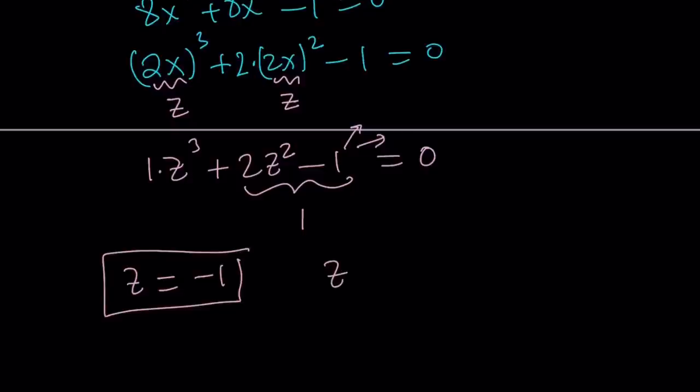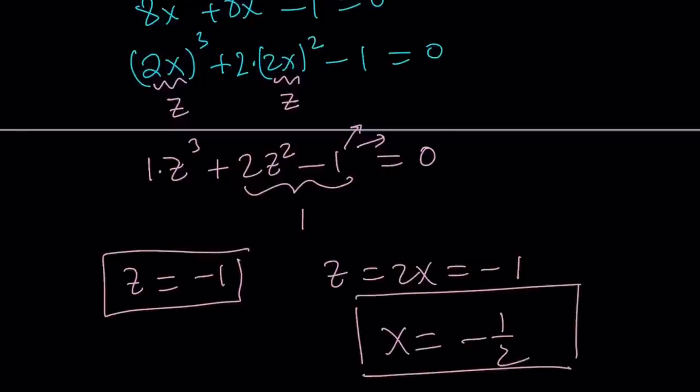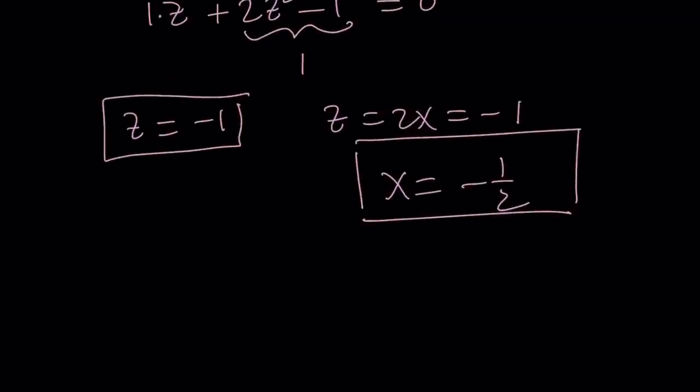But remember, z is 2x. So, 2x is equal to negative 1, that means x equals negative 1 half is a real solution. And guess what? That is the only real solution. When we look at the graph, you're going to get a better idea. All right? So, let's go ahead and take a look at the graph, or should we find the non-real solutions?